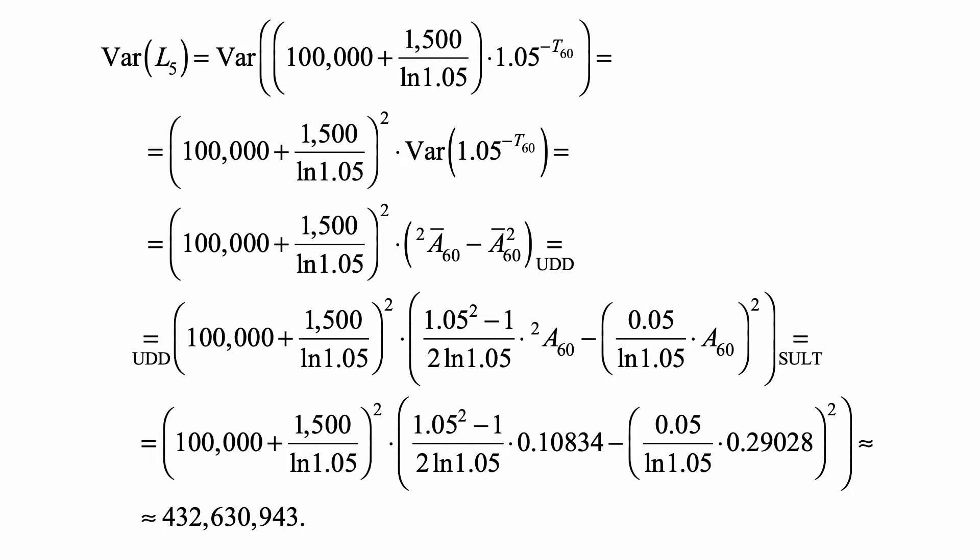We don't have the continuous life insurance on the table, but we have the uniform distribution of death assumption. So ²a̅₆₀ is calculated from A₆₀ using the UDD assumption under the assumption of twice the force of mortality, so 2 times ln(1.05).